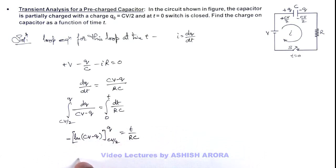So this becomes ln(CV - q) divided by CV/2, and that equals -t/(RC).